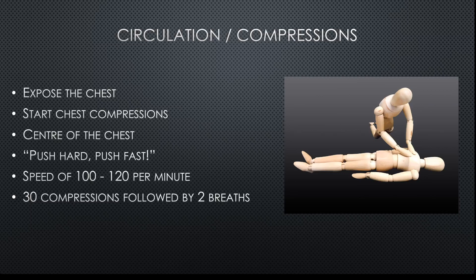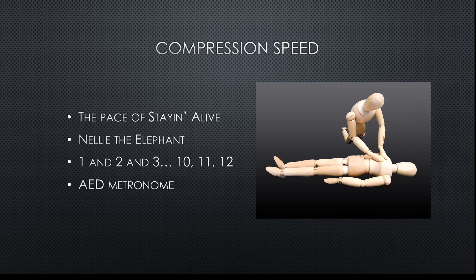Your compression speed should be about 100 to 120 compressions per minute, delivering 30 in a row followed by two rescue breaths. Maintaining compression speed is not always easy in a stressful situation — adrenaline will make you count too fast. You can follow the pace of the Bee Gees song 'Stayin' Alive', as seen in some TV adverts for hands-only CPR. 'Nelly the Elephant' apparently also works. However, please do not sing these songs out loud. The commonly used method is simply counting '1 and 2 and 3' — the 'and' slows you down — continuing '10, 11, 12' and so forth, to reach close to 100 to 120 compressions per minute.